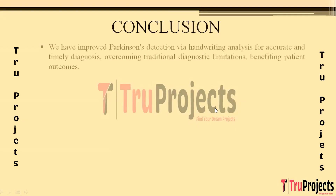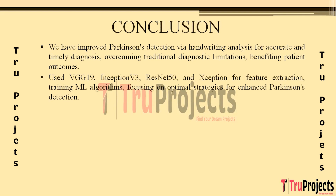In conclusion, this project was undertaken to improve early detection of Parkinson's disease by leveraging handwriting analysis. Traditional diagnostic methods face limitations, prompting the exploration of innovative, non-invasive approaches. By focusing on subtle handwriting changes as potential early indicators, the project aimed to develop a more accurate and timely diagnostic tool, ultimately enhancing patient outcomes. The project utilized deep learning architectures VGG-19, Inception-V3, ResNet-50, and Exception to extract intricate features from handwriting data, with various machine learning algorithms trained on the extracted features and evaluated using accuracy, precision, recall, and F1 metrics.